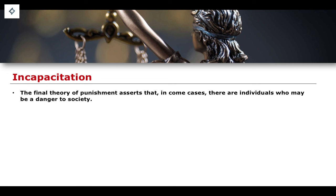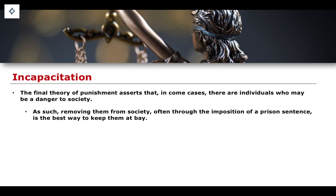Finally, we have this idea of incapacitation. This is the final theory of punishment, and it asserts that in some cases there may be individuals who are a danger to society, and the purpose of punishment is to remove them from society. The imposition of a prison sentence may be the best way of keeping people outside of society to protect others. This doesn't necessarily work for instances where the punishment is a fine or a fixed penalty notice, but it is something that may work for individuals who commit quite serious offences and therefore need to be taken out of society and put into prison to keep the rest of society safe from that individual.